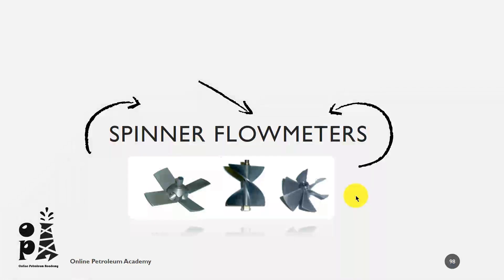Despite numerous attempts to use other technologies, the spinner paste tools remain the primary way to assess fluid velocity. Even the latest multiple probe tools use micro-spinners placed at strategic points in the wellbore cross-section.